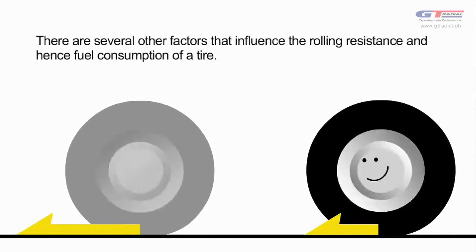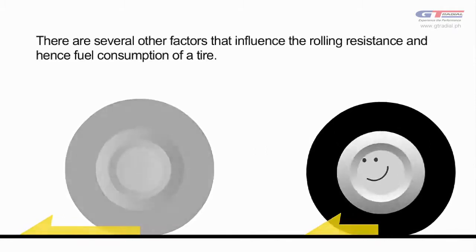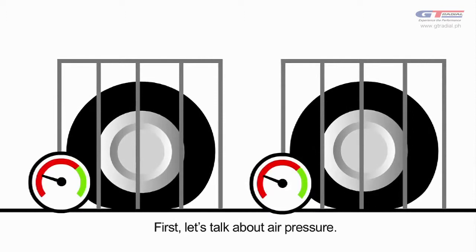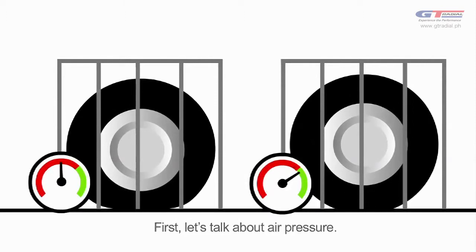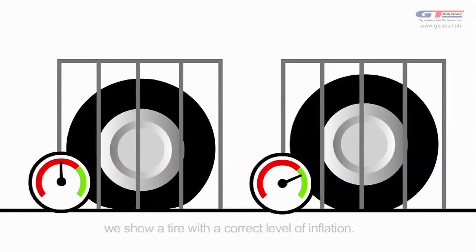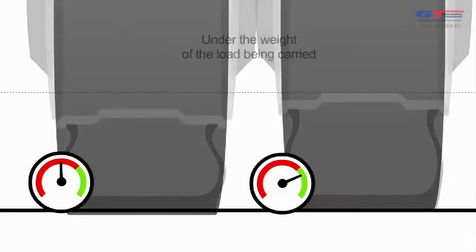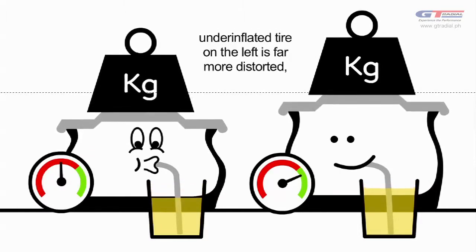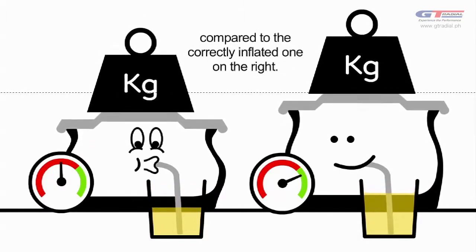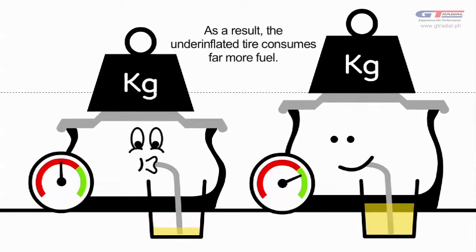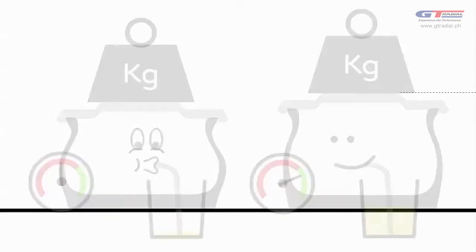There are several other factors that influence the rolling resistance and hence fuel consumption of a tire. First, let's talk about air pressure. On the left, we are showing an under-inflated tire, and on the right, we show a tire with the correct level of inflation. Under the weight of the load being carried, the under-inflated tire on the left is far more distorted compared to the correctly inflated one on the right. As a result, the under-inflated tire consumes more fuel.